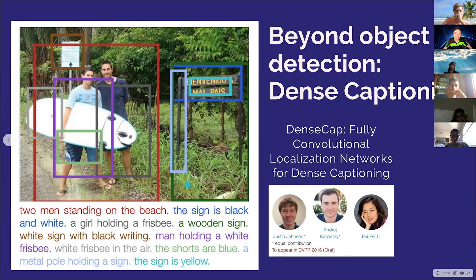So saying this part is a girl holding a frisbee. I don't know why. It doesn't seem right. A wooden sign. Yep, that's absolutely right. White sign with black writing. So I think that's this guy. Yes. Man holding a white frisbee. So I guess I never trained on a surfboard. White frisbee in the air. That's even funnier. This guy. So, okay, the mist, right? And then the shorts are blue. Yes, the shorts are blue. A metal pole holding a sign. Yes, that's a metal pole holding a sign. The sign's yellow. Yes, the sign's yellow.